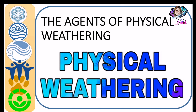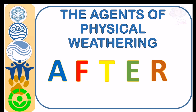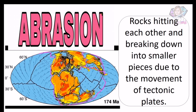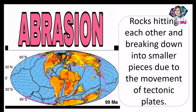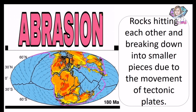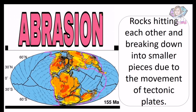Today we're going to discuss the different agents of physical weathering. I want you to remember this word — the word 'AFTER,' not before, but after. Let us start with abrasion: rocks hitting each other and breaking down into smaller pieces due to the movement of tectonic plates.